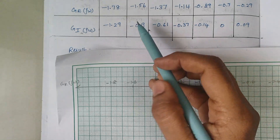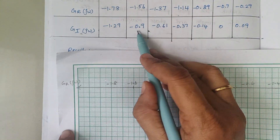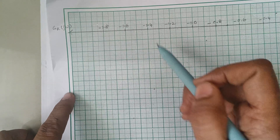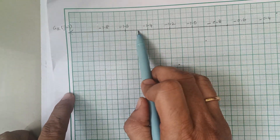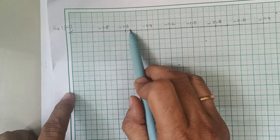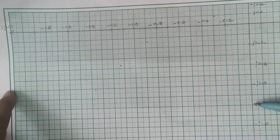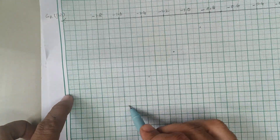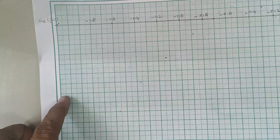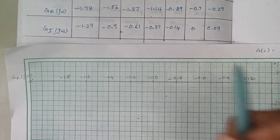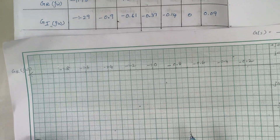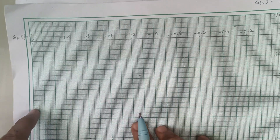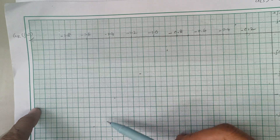For the second point, the real value is minus 1.56 and the imaginary value is minus 0.9. On the graph, 1.56 lies between 1.5 and the next marking, and 0.9 lies just below 1. Mark that point accordingly. Similarly, plot all the remaining points from the table. Once all points are plotted, join them using a freehand curve.